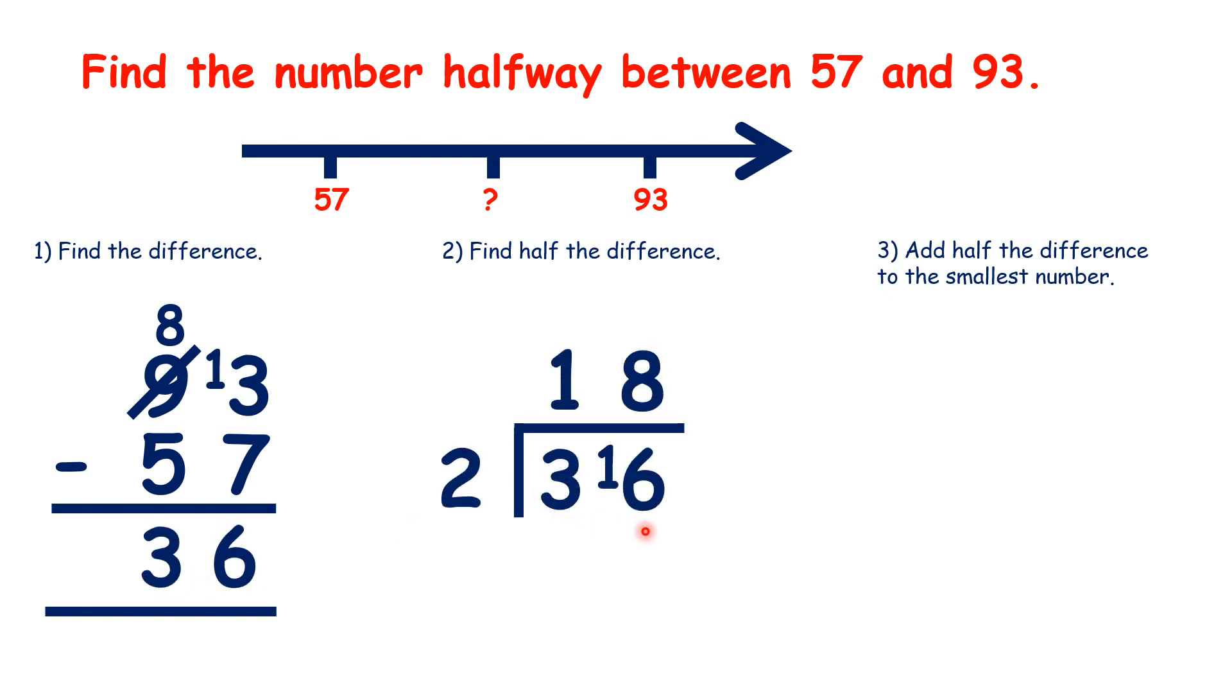Then we add half of the difference to our smaller number. So 75 is the number halfway between 57 and 93.